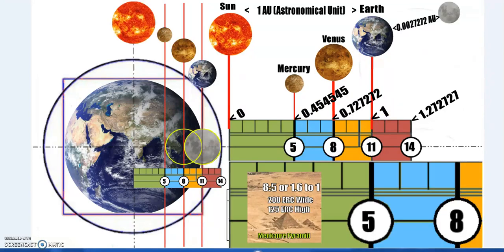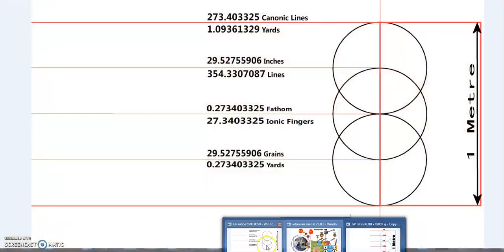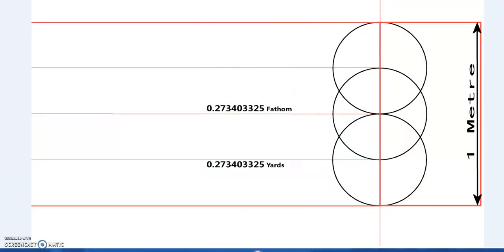This also connects to the Moon. So back to the double Vesica over one meter, over the one-second pendulum, and the Egyptian royal cubit — all these numbers break down. One meter gives us the Egyptian royal cubit; one meter, one second, one Egyptian royal cubit. The pendulum measures time. Dividing into quarters gives us 0.273403325 yards.